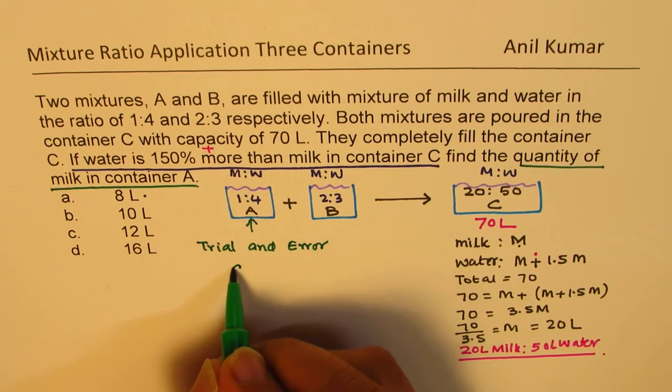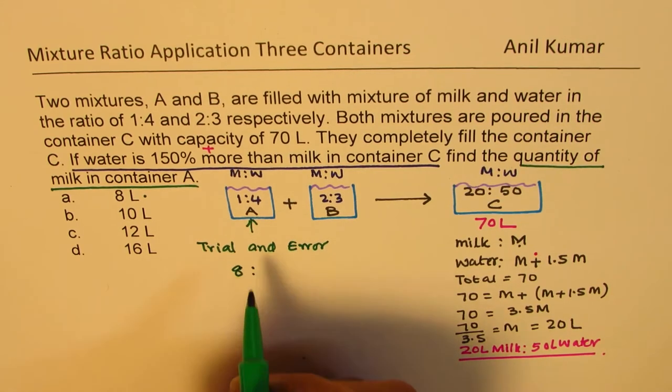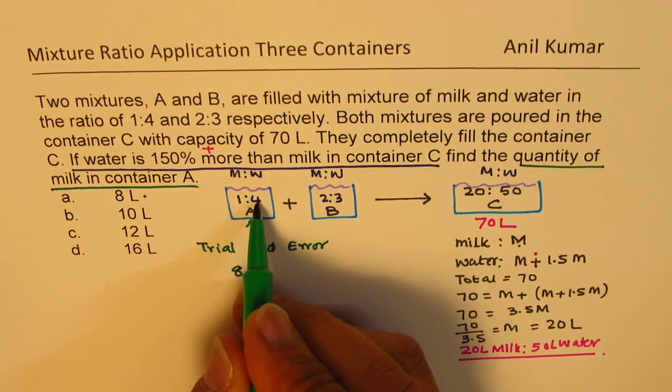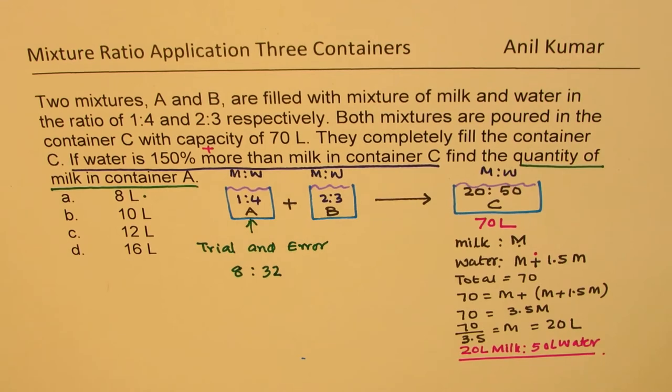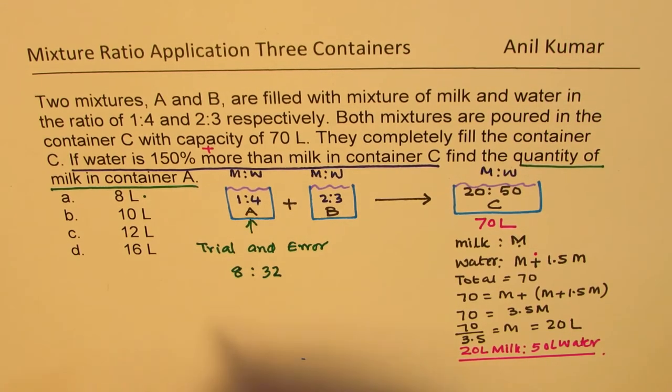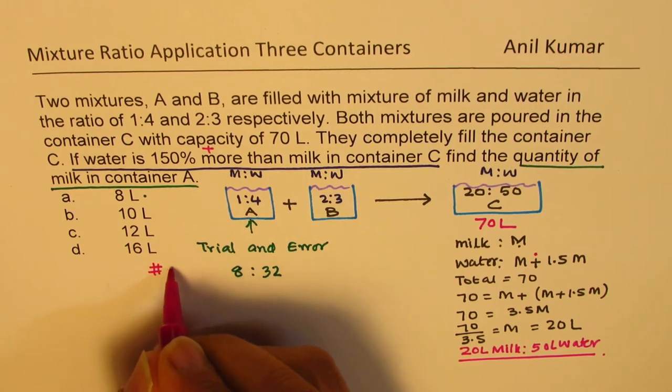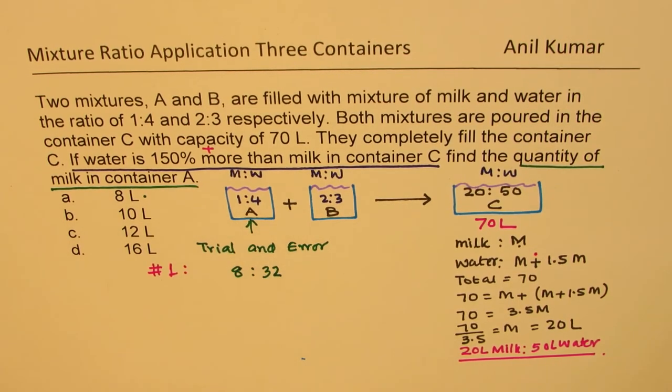We'll try value 8. Let us say we have 8 here. Since the ratio is 1 is to 4, that means water should be 8 times 4, which is 32. So now we'll just try. So this is our option 1. Option 1, we are trying the value 8 liters.